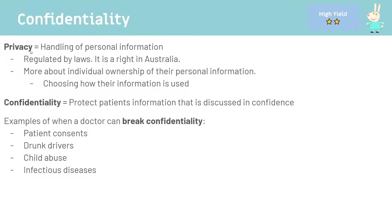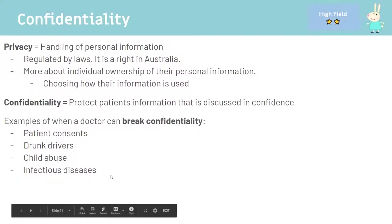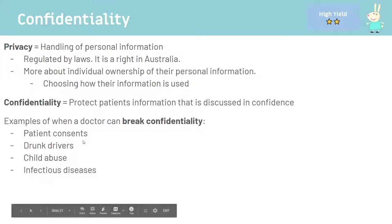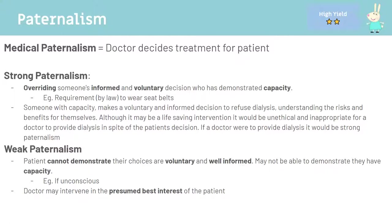Second concept: confidentiality. Differentiate privacy from confidentiality — privacy is the handling of personal information, regulated by law, about individual ownership of their information. Confidentiality is about the protection of patient information discussed in confidence, more under common law. A doctor can break confidentiality when a patient consents, for drunk drivers, child abuse, and infectious diseases — the last three because they pose a significant burden on community well-being and immediate safety to those around.